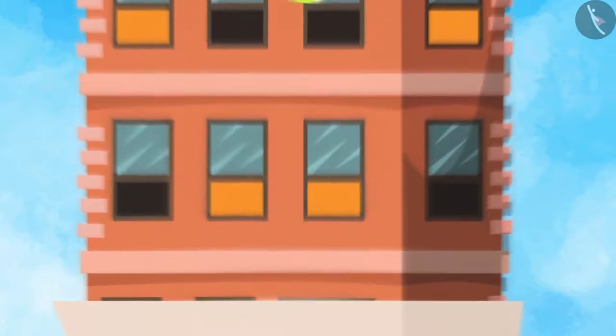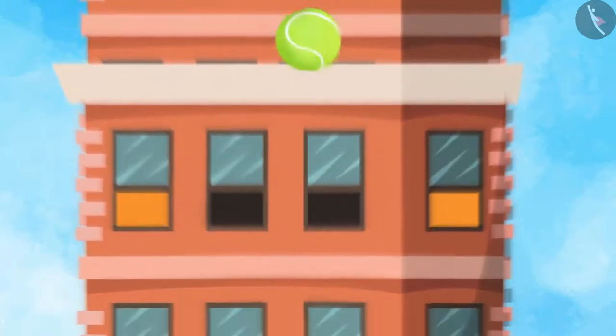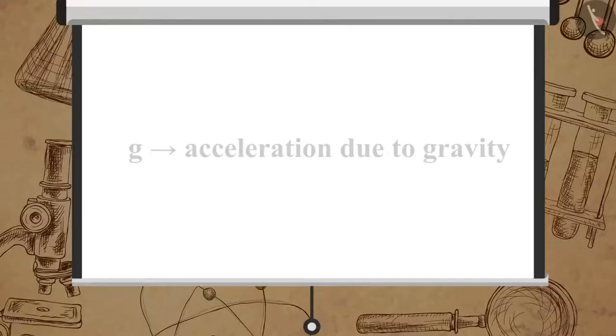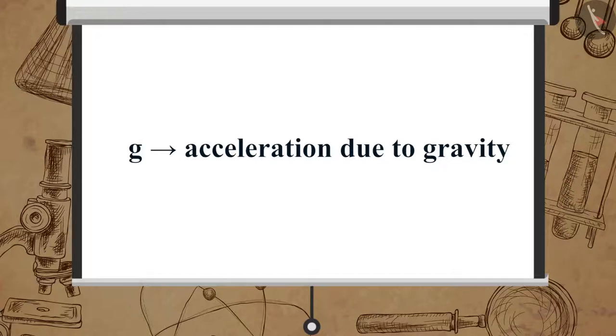So, when an object is falling towards the Earth, an acceleration is involved. Thus, we refer to this acceleration as acceleration due to gravity. It is denoted by g.